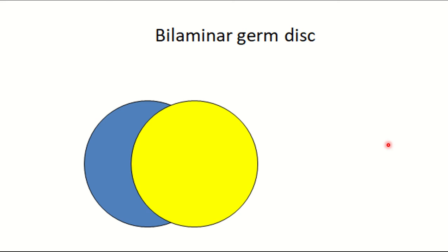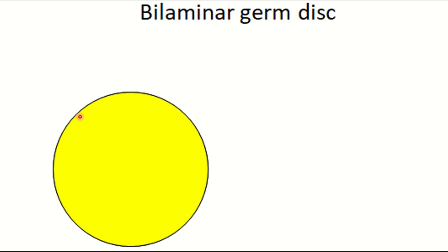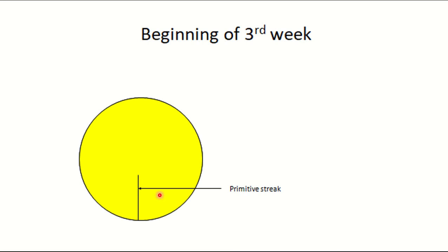Looking at the bilaminar germ disc, we cannot initially tell which end is the future cranial end and which is the future caudal end. At the beginning of the third week, a depression appears, indicating the future caudal end. This depression forms because cells in this region are mitotically active, producing new cells that move downward.